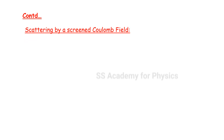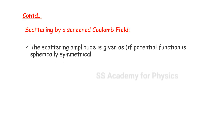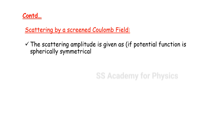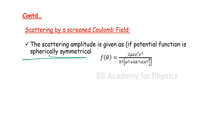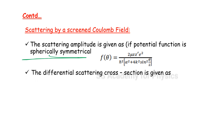Next: scattering by a screened Coulomb field. The scattering amplitude is given when the potential function is spherically symmetrical. f(θ) = (2μ ZZ'e²) / ℏ² multiplied by 1/(a² + 4k² sin²(θ/2)). This is the scattering amplitude for the screened Coulomb potential.